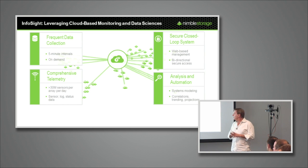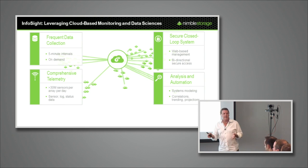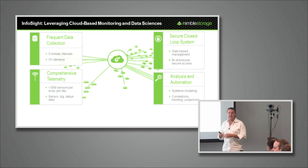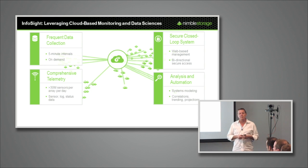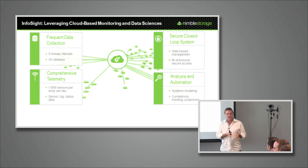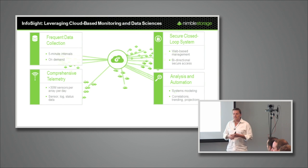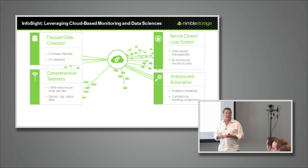We also collect comprehensive telemetry each day — full configuration, statistics, log events, and state information. We're talking about 30 million sensors per array per day. There are about 20,000 different sensors built into the system recording at a per-second interval on the array. We bring home the per-minute roll-up each day, so on a minimally configured array we get about 30 million data points. On an array with many volumes and snapshots, that number might be up into the hundreds of millions per day. All of that gets into the InfoSight engine for analysis.